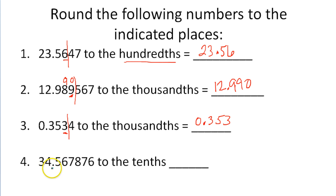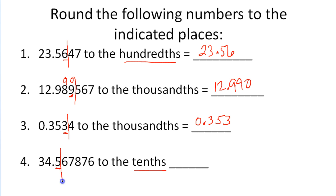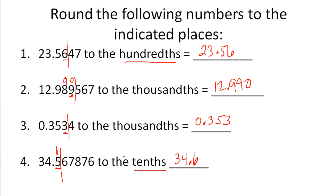Let's take a look at this last one here. We have 34.567876, and we want to round this to the tenths place. The 5 here is occupying the tenths place. So I need to look 1 past the tenths place to the hundredths place — and it's 5 or higher. Because this is 5 or higher, that means I'm going to have to round this 5 up to a 6. And ultimately, my answer will be 34.6 if I'm asked to round to the tenths place.